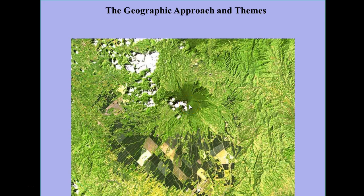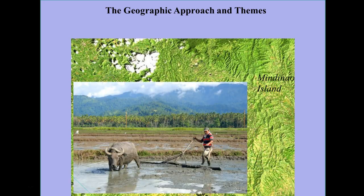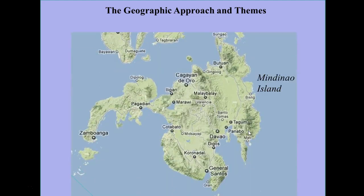You can see that there is an apparent symmetrical feature here — this turns out to be a mountain peak — and we can further describe this location. This is Mindanao Island, and an image of what that looks like on the ground gives us a sense of a more traditional form of agriculture, with the use of a water buffalo as a beast of burden as opposed to mechanized equipment.